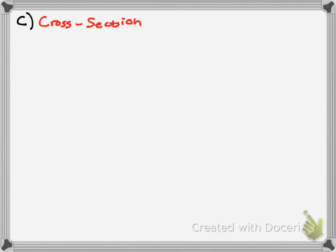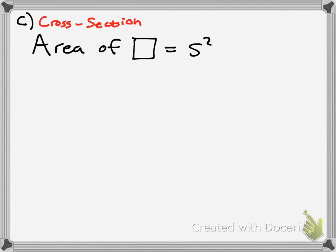Part C is cross sections, which are generally pretty easy once you understand what you're doing. Imagine cutting the volume in half in slices, like a loaf of bread. When you cut it, it makes a square — the problem tells you the cross-sections are squares. Integration adds up an infinite number of things, and here we're adding up the areas of squares. The area of a square is side squared.